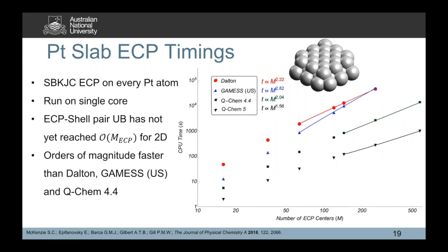The efficient recurrence relations and upper bounds screening were implemented into LibQInt as of Q-Chem 5.0. Looking at a platinum slab with SPKJC effective core potential on every platinum atom and comparing serial timings, Q-Chem 5 hasn't quite reached its ideal linear behavior — the asymptotic scaling is about 1.56 rather than 1.0 because the upper bound hasn't fully converged and there's cost to evaluating the upper bound itself. But Q-Chem 5 is both orders of magnitude faster than Q-Chem 4.4, and even faster than Dalton and GAMESS.